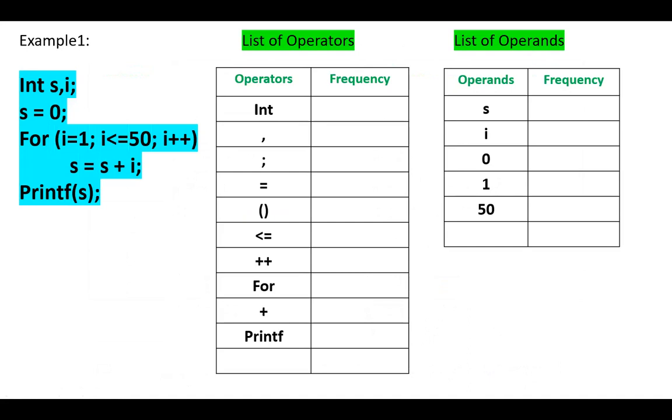Example 1, suppose that we have the following program for summing the integers from 1 to 50. Integer S, I; S is initialized to 0. For I equals 1, I less than or equal 50, I plus plus, S equals S plus I, and outside the loop, we print S.